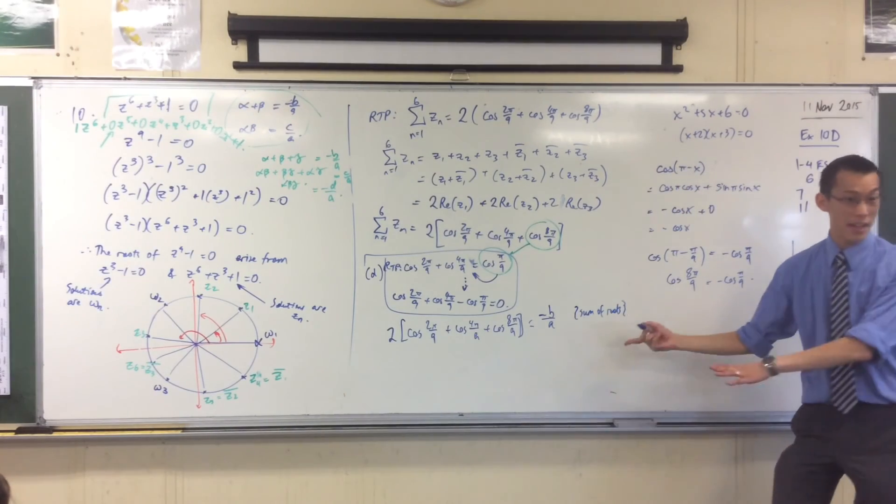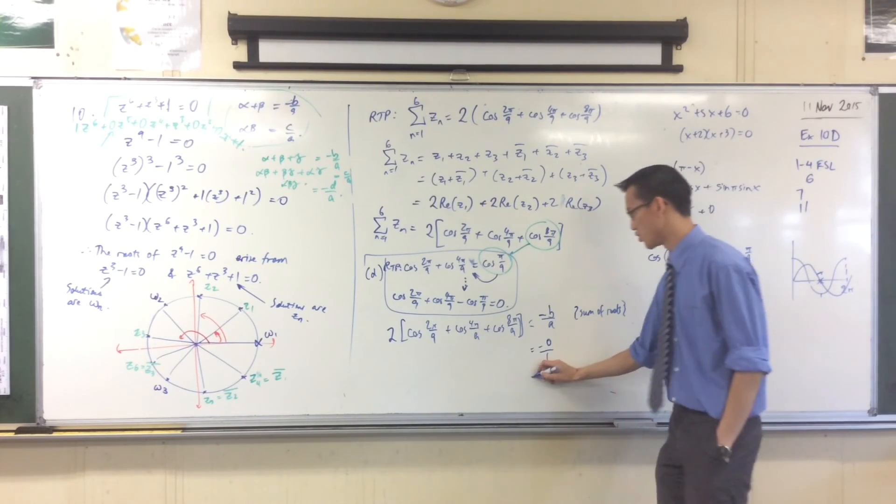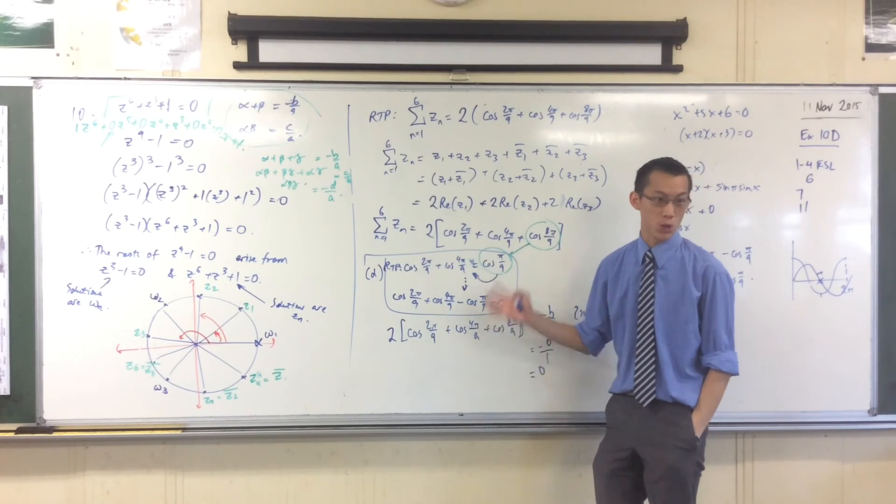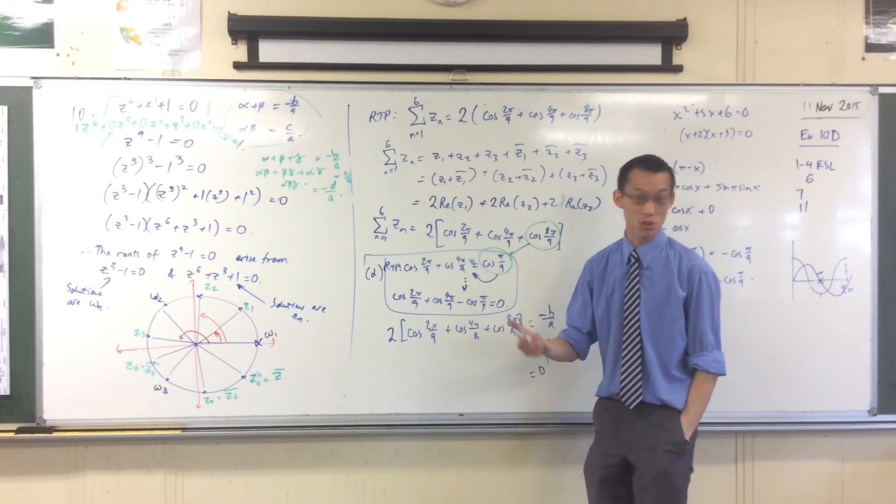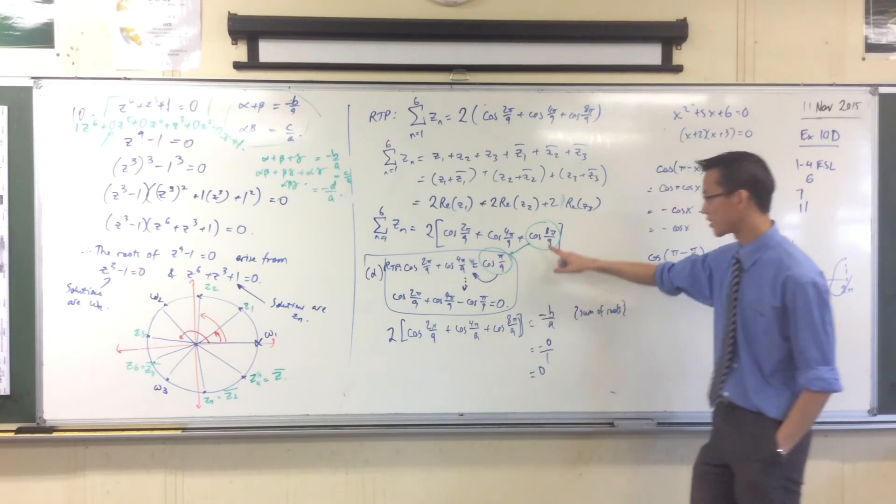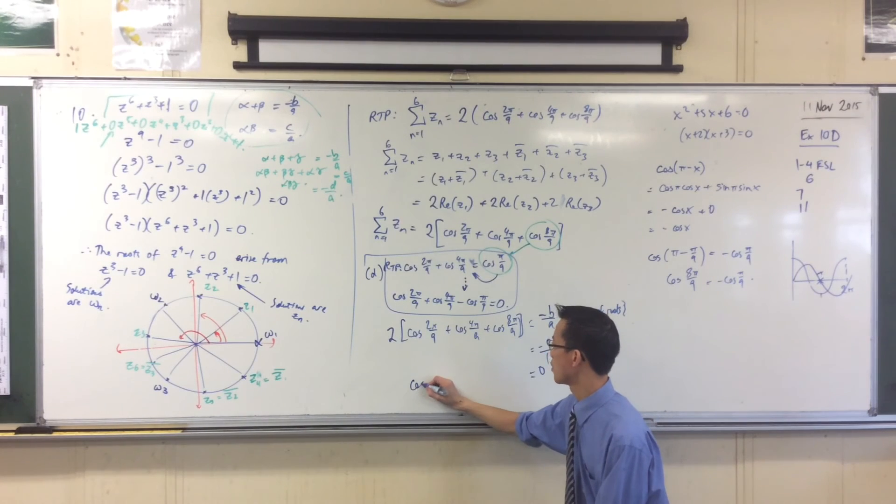Okay? So now I can evaluate this thing, right? This is minus zero on one, as we were saying, which is zero, okay? Since it's zero, I can divide both sides by two. No trouble, because zero divided by two, still zero. And then I'm going to substitute out my cos 8 pi on nine, because I don't actually want cos 8 pi on nine, I want cos pi on nine. So that leaves me with this.